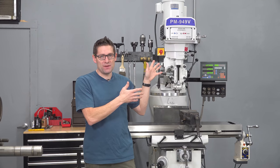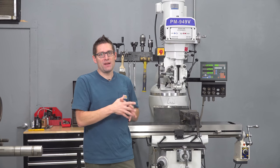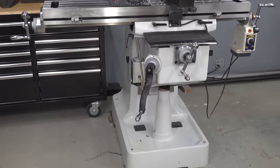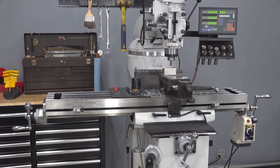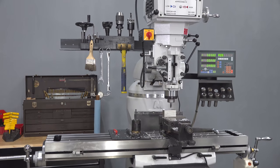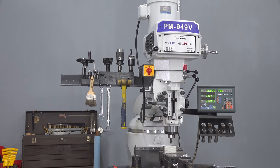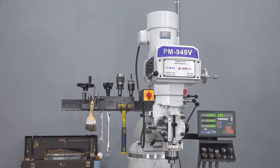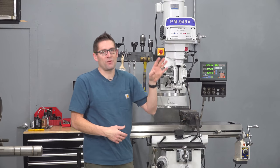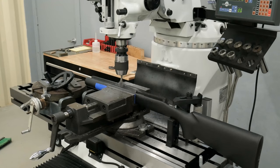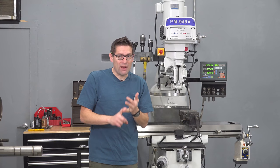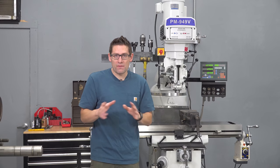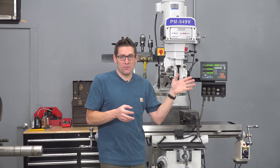This is the Precision Matthews PM949TV. It is a 3 horsepower variable speed head Bridgeport semi-clone. Over the last year and a half, I've really gotten to know this machine well and have completely decked it out for gunsmithing, precision work, general machining and fabrication, drilling - all of the things that I do on a routine basis with a vertical milling machine.